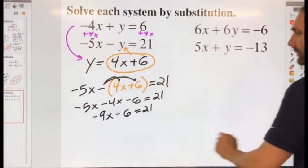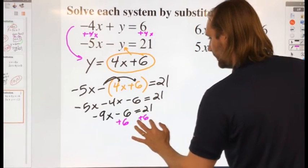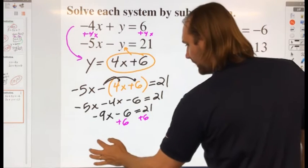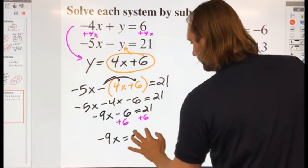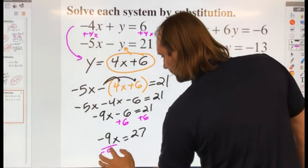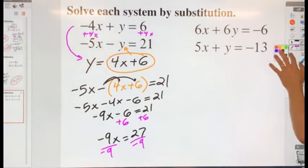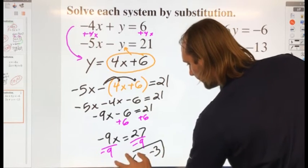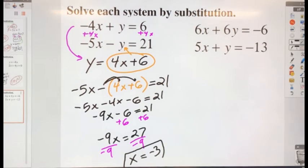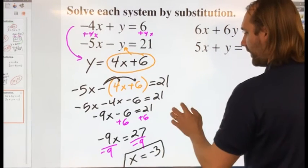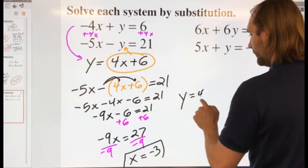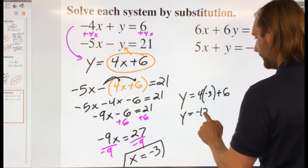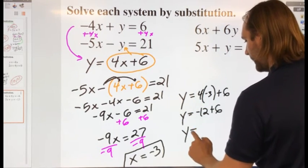And now let's solve. So add 6, add 6, negative 9x equals 27. Last but not least, divide by negative 9, I get an x value of negative 3. Now I need to find the y value. So let me substitute x in here. Y equals negative 4 times negative 3 plus 6. Y equals negative 12 plus 6. Y equals negative 6.